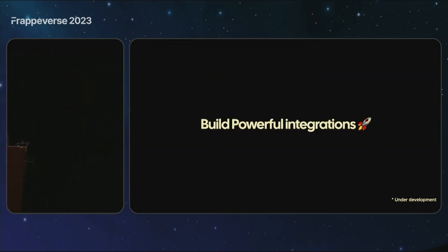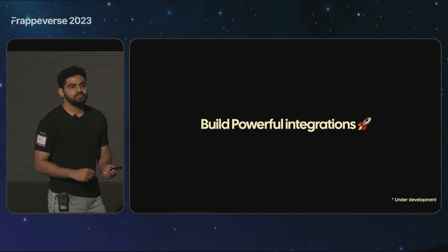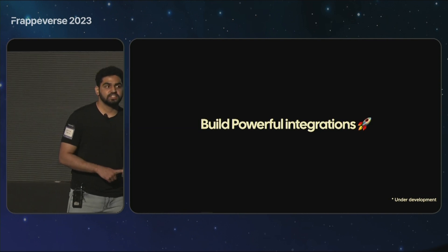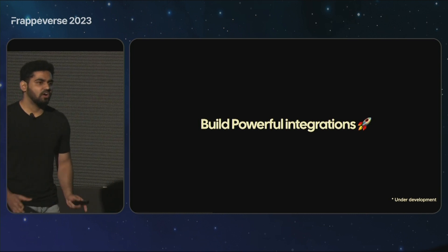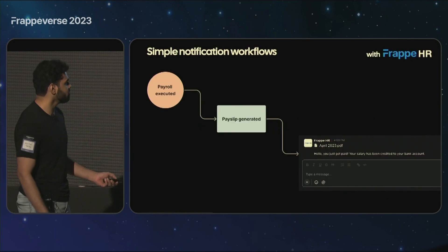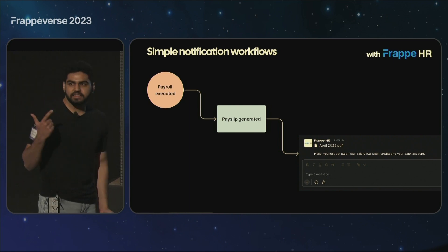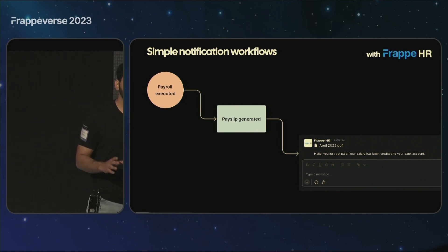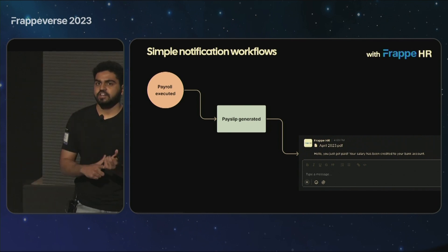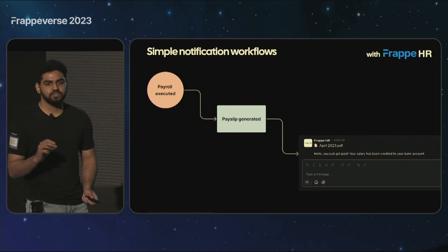Raven allows you to build powerful integrations. Our integrations are of two types: it can be an integration with an app installed on your site like ERPNext or Helpdesk, or it can be with a third-party service like GitHub or Linear. Integrations basically have two parts: the trigger and the message payload. You select a trigger — it can be a doc event, a scheduled cron job, or a webhook — and craft a message to send to a channel or user.